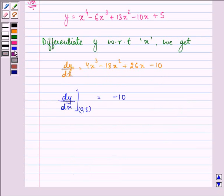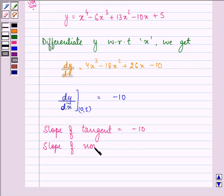So we have slope of tangent is dy by dx that is minus 10 and slope of normal would be minus 1 upon dy by dx that is minus 10. That will give us the value as 1 upon 10.